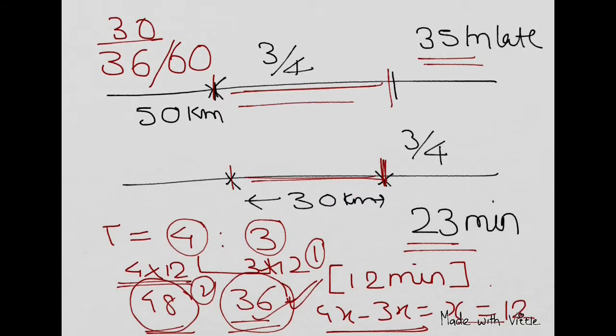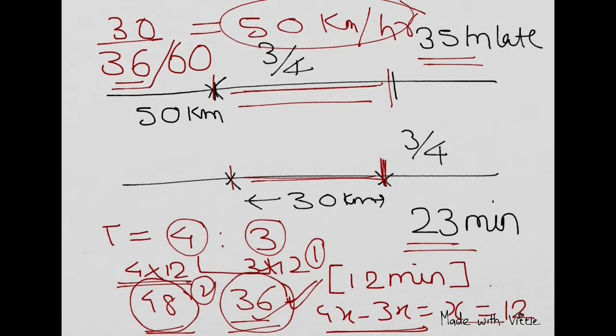Having obtained the time, you can do what - the distance was 30, so 30 by 36 by 60 because you have to deal in kilometer per hour. That is given in minutes, so you got 50 kilometers per hour.